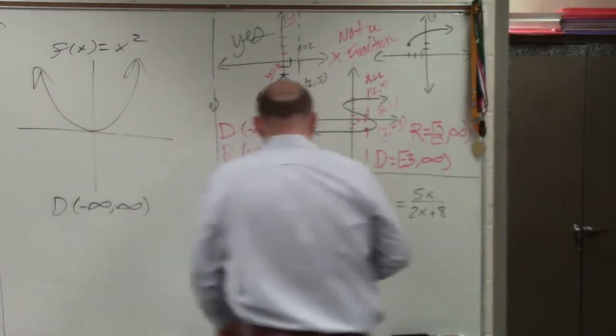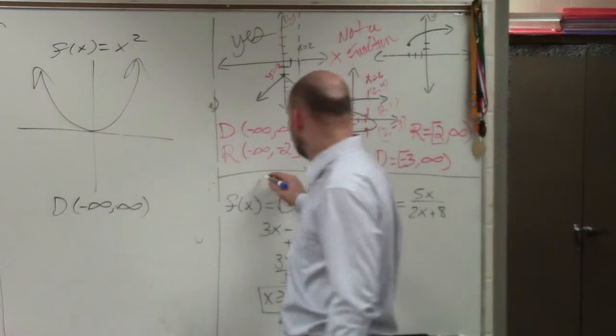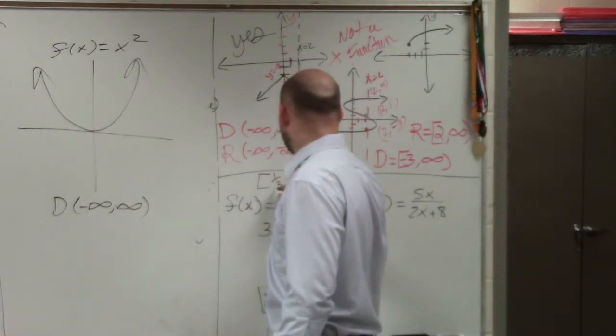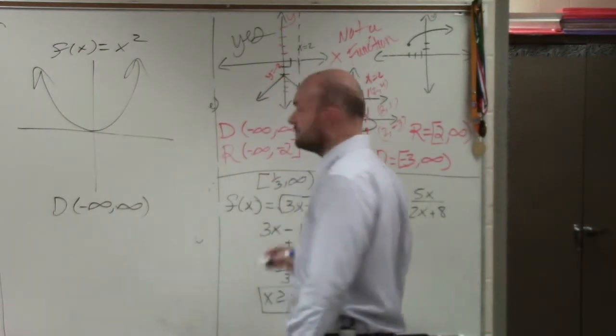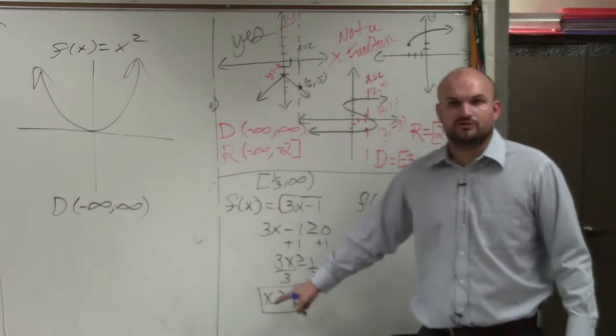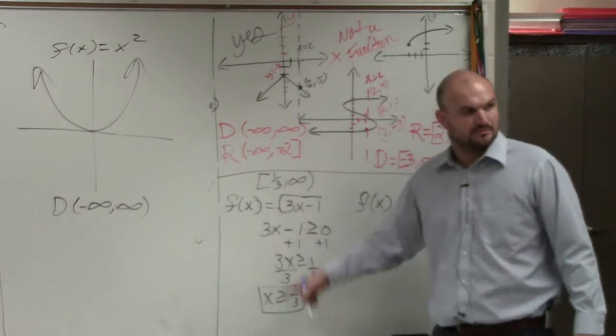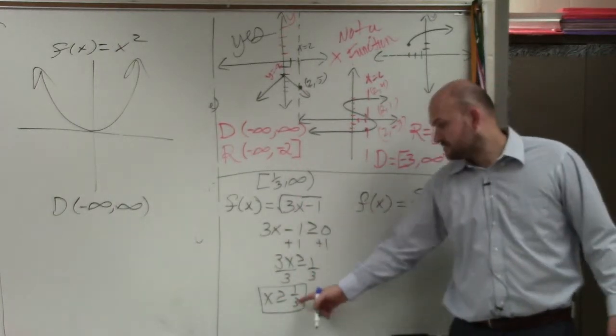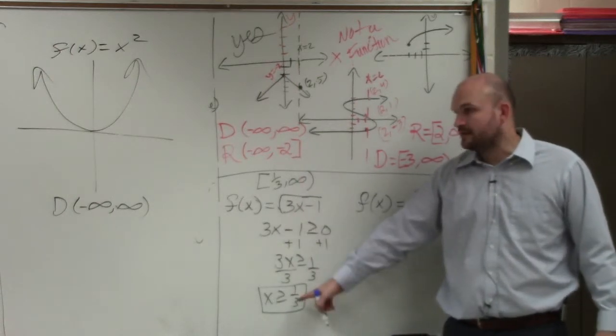If you wanted to write it in our other notation, you could do that. You could say 1 third to infinity. This is just a different way to write the domain. It's the same thing. So 1 third to infinity, or you could write it like that.